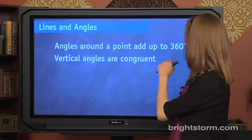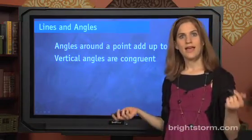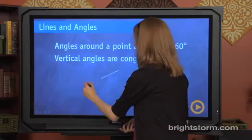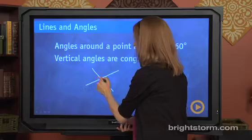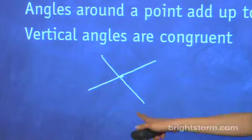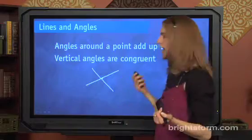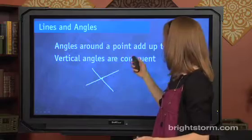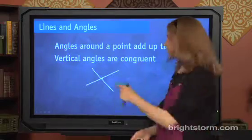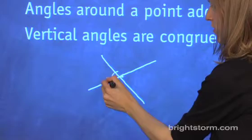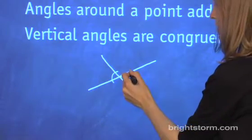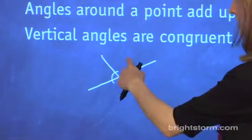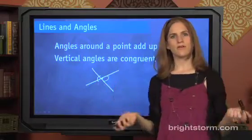Another thing: angles around a point add up to 360 degrees, and vertical angles are congruent. So let's say I had angles around a point — I've got four angles all around a point, and all the angle measurements added together would equal 360 degrees. And by the way, vertical angles are the angles on opposite sides. For example, this is a vertical angle to this, so these angles would be equivalent to each other.